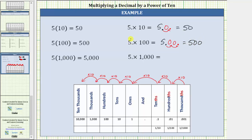Notice here the 5 is in the ones place value. After multiplying by 100, the 5 is in the hundreds place value, verifying 500 is 100 times larger than 5. And finally, we have 5 times 1,000. Because 1,000 is 10 times 10 times 10, to determine the product, we move the decimal three places to the right — one, two, three. Fill in the missing digits, which gives us the product 5,000.